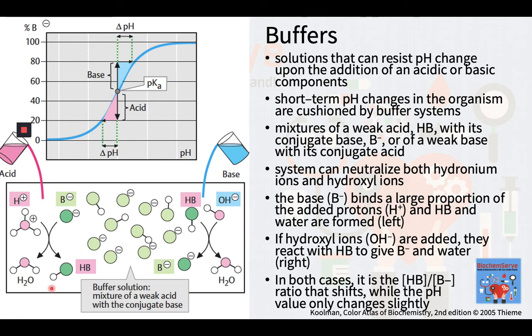In the first case, shown on the left, the base or B- ion binds a large proportion of the added protons or hydrogen ions, and HB and water are formed. On the other hand, as shown on the right, if hydroxyl ions or OH- ions are added, they react with HB to give B- ions and water. In both cases, it is primarily the HB over B- ratio that shifts, while the pH value only changes slightly.